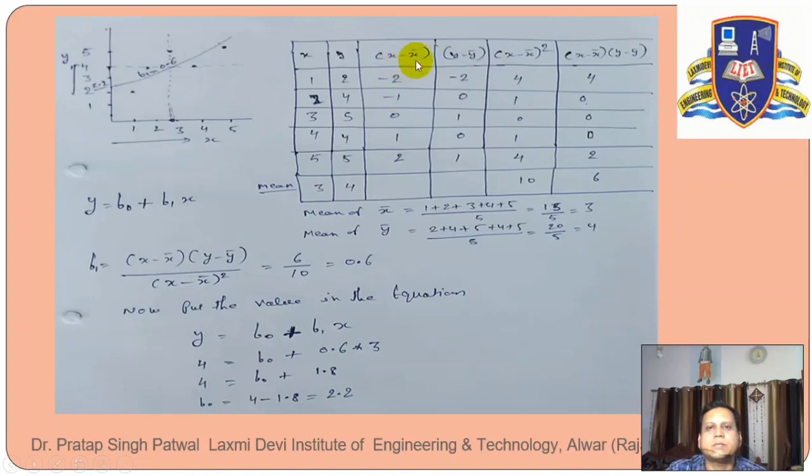What do we do? We take x minus x bar and y minus y bar, and calculate their product. We also calculate x minus x bar whole square. We know the formula: b1 equals the sum of x minus x bar times y minus y bar divided by the sum of x minus x bar whole square.